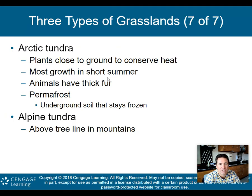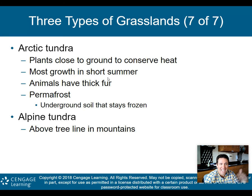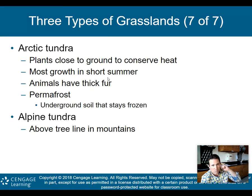In the Arctic tundra, plants grow close to the ground to conserve heat and most grow in the short summer. Animals have thick fur. There is something called permafrost, where underground soil stays frozen year-round. There's also something called the alpine tundra — the same type of environment but in mountains — which can occur at lower latitudes above the tree line.